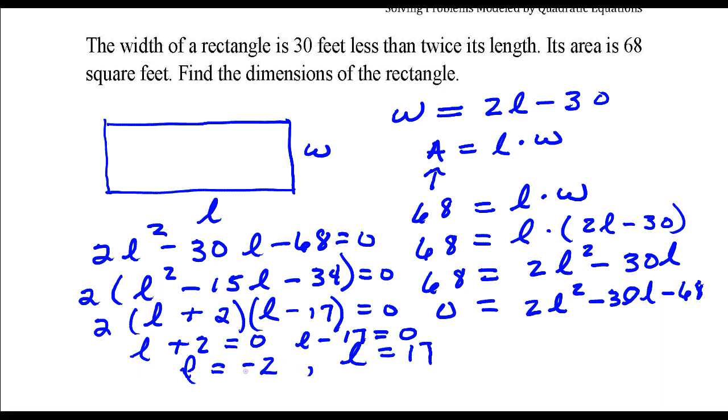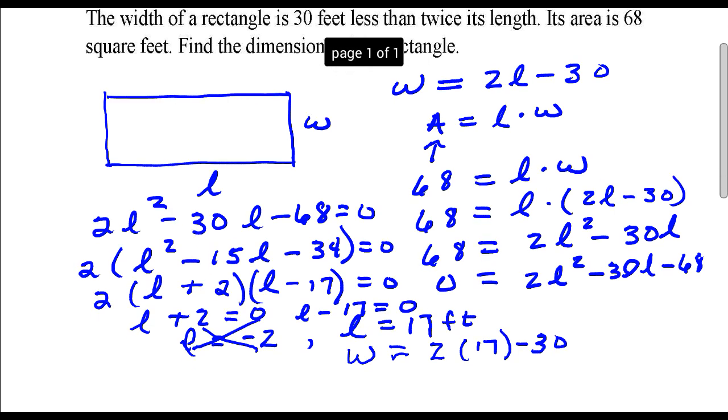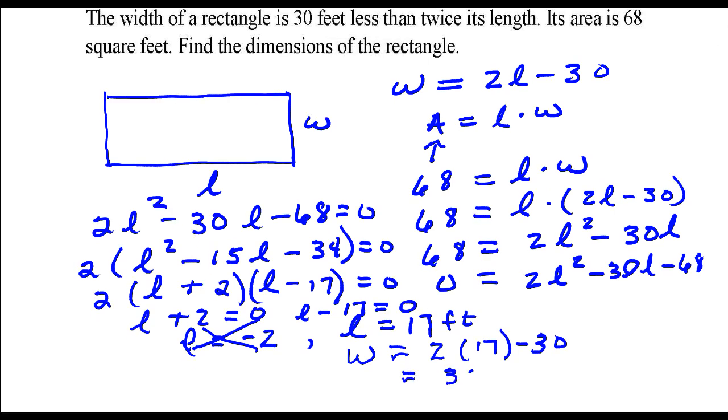Well, automatically I'm going to throw this one out because in the context of this problem, we're trying to find the dimensions of this rectangle and we can't have a length that's negative. So in this case, our length is 17 feet and our width would be 2 times 17 minus 30. That's 34 minus 30. That's 4 feet.